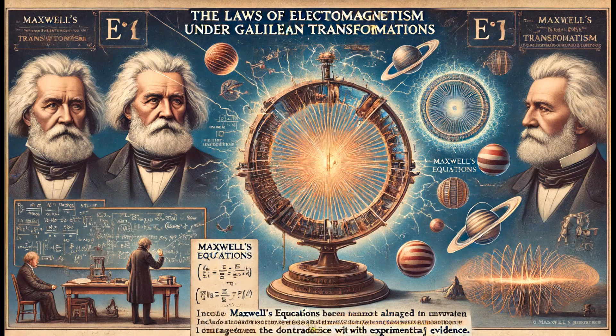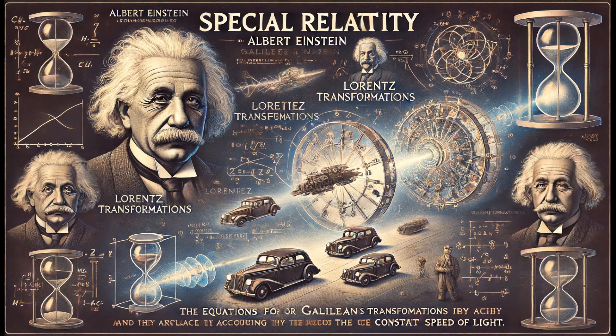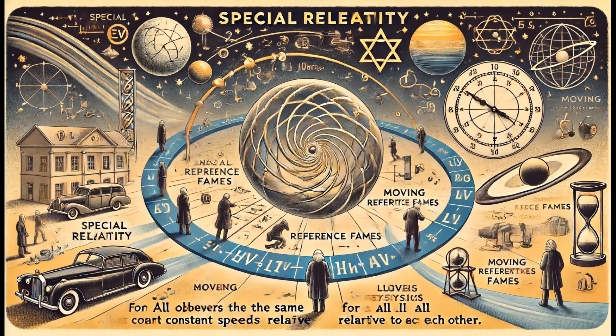Special relativity, formulated by Albert Einstein, addresses this problem by introducing Lorentz transformations, which replace Galilean transformations. Lorentz transformations take into account the constant speed of light and ensure that the laws of physics, including electromagnetism, are the same in all inertial reference frames.